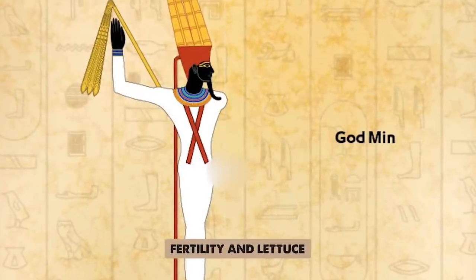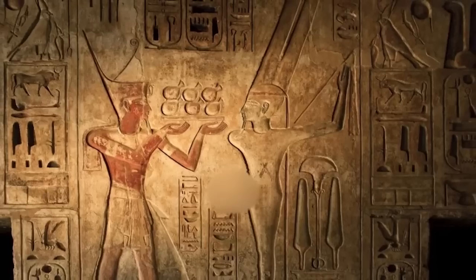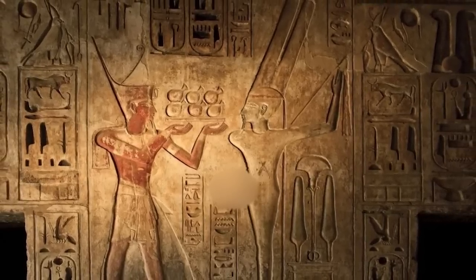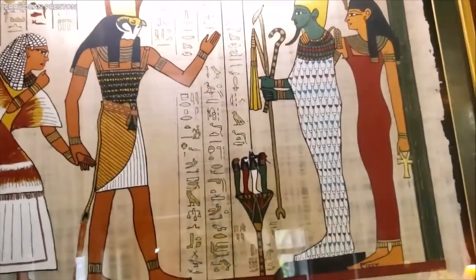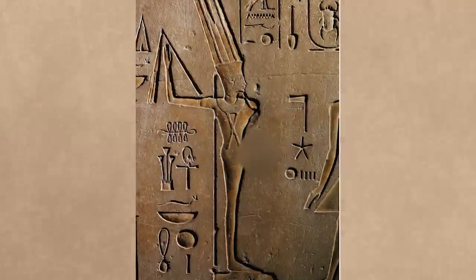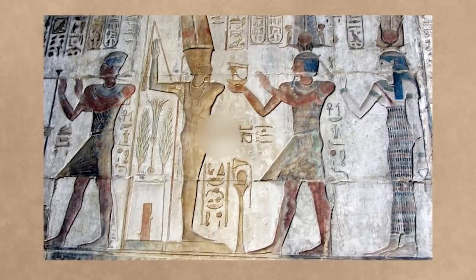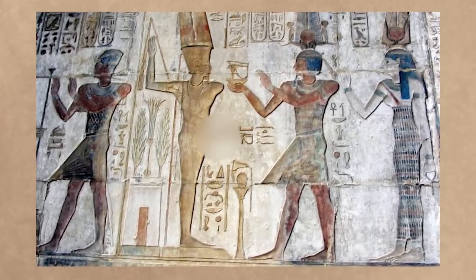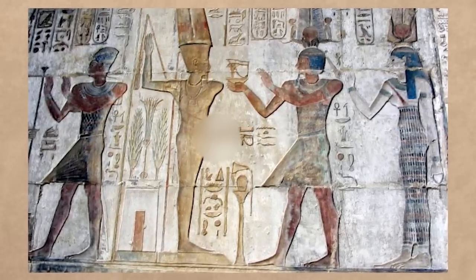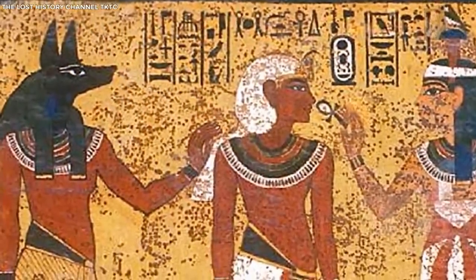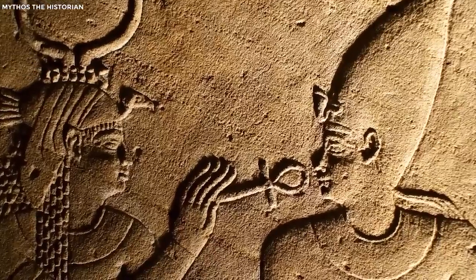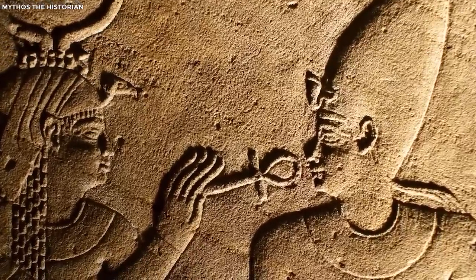Images of Min, the god of fertility and lettuce, were often accompanied by hieroglyphics signifying thousands, indicating his role in bestowing abundant progeny. Lettuce, believed to be an aphrodisiac, was often depicted alongside erotic scenes in hieroglyphic art. While explicit sexual acts were not commonly depicted in hieroglyphic texts due to their sacred nature, various symbols served as metaphors for sexual activities, reinforcing the theme of sex as a natural, life-giving process.